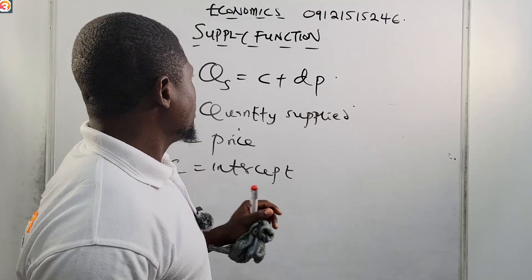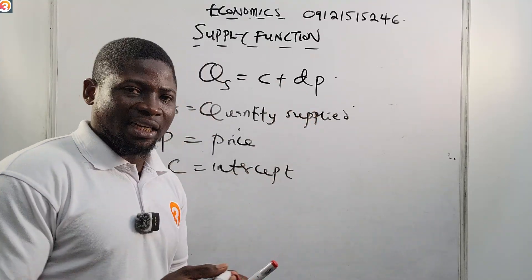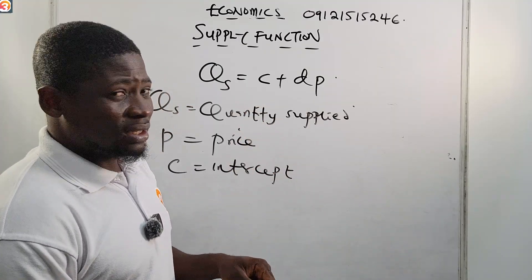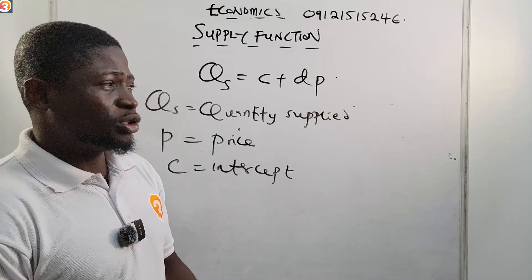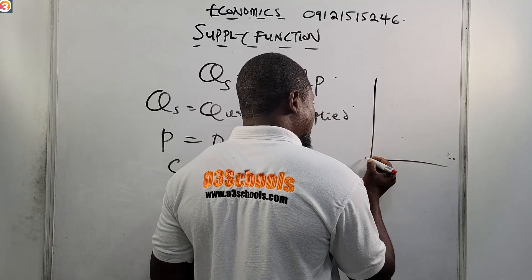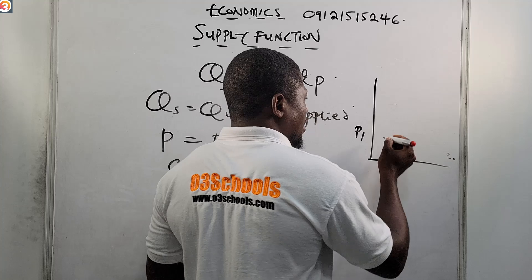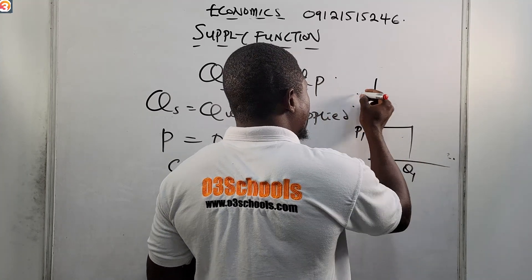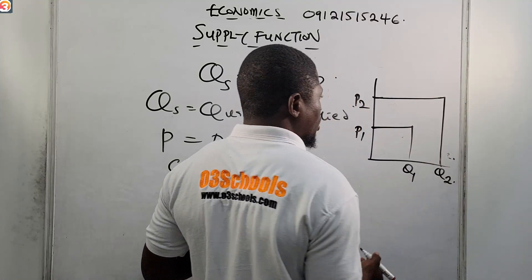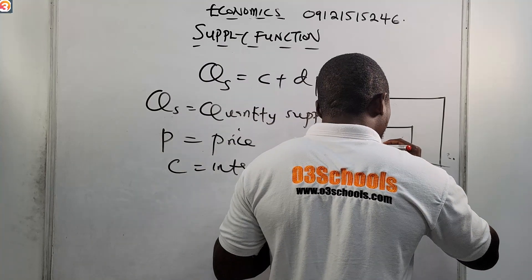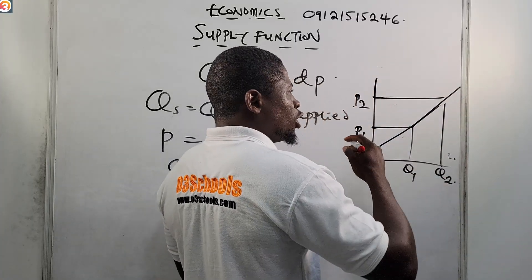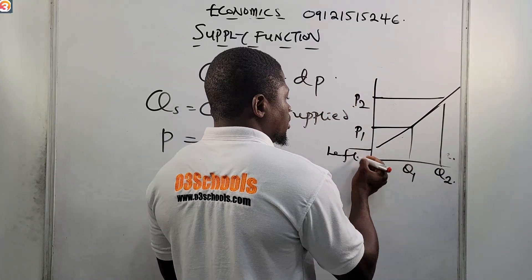The variable d is the gradient or slope. Notice that the supply function has a positive slope, as we can see from the supply curve. If price is at P1, the quantity supplied is at a certain level; if price goes up to P2, the quantity supplied also increases to Q2. So the graph is always positively sloped — it slopes upward from left to right.